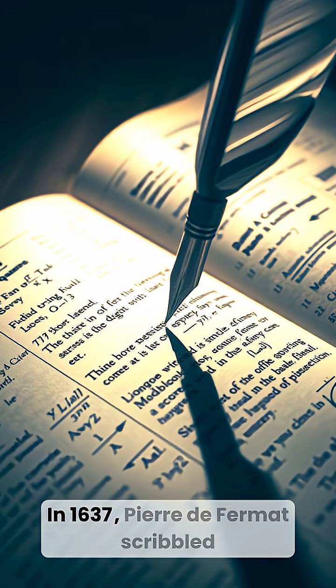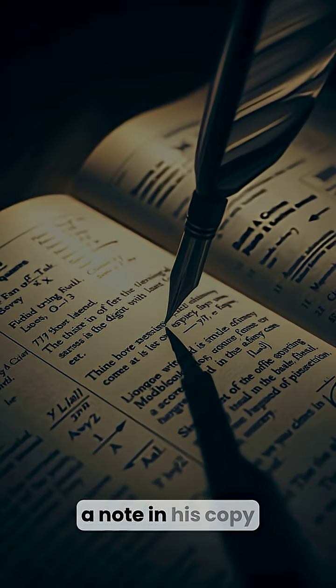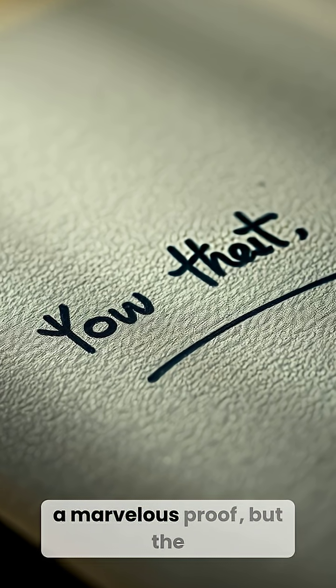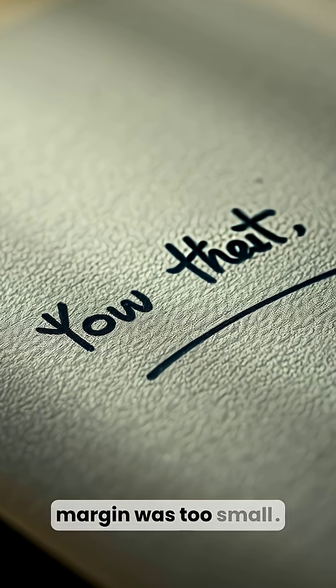In 1637, Pierre de Fermat scribbled a note in his copy of Arithmetica. He claimed to have found a marvelous proof, but the margin was too small.